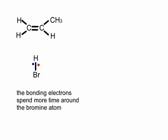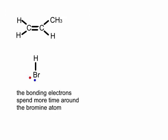This is how they actually move — the two electrons spend time around both atoms. Now if the molecule was a homonuclear diatomic molecule, such as H₂, Cl₂, or Br₂, where the two bonded atoms are identical, the electrons would spend their time around both atoms equally. But in HBr, because bromine is more electronegative — which literally means it can pull electrons more strongly — the electrons spend more of their time around the bromine atom.